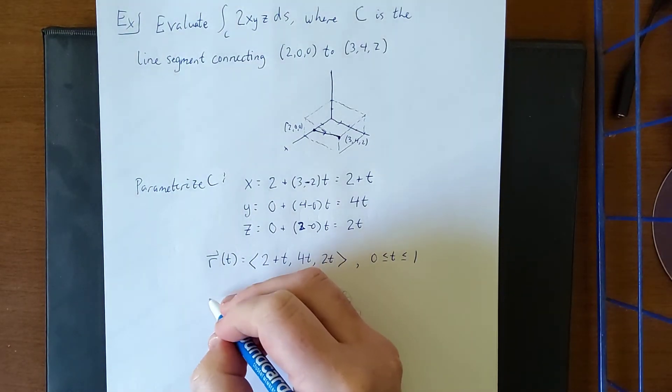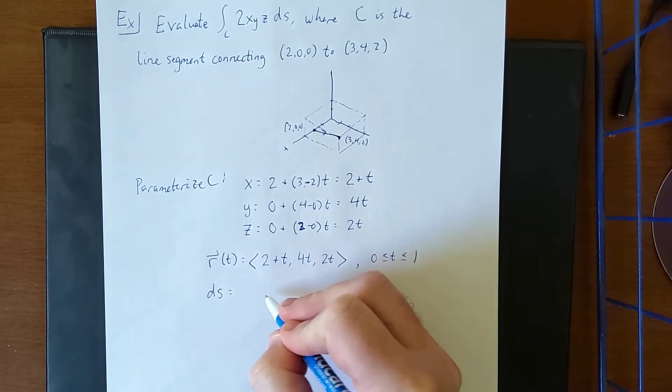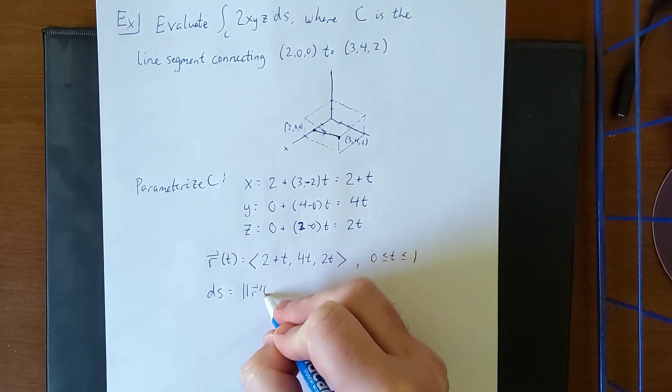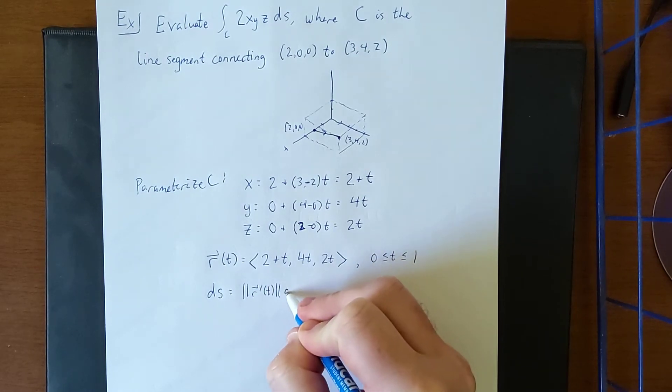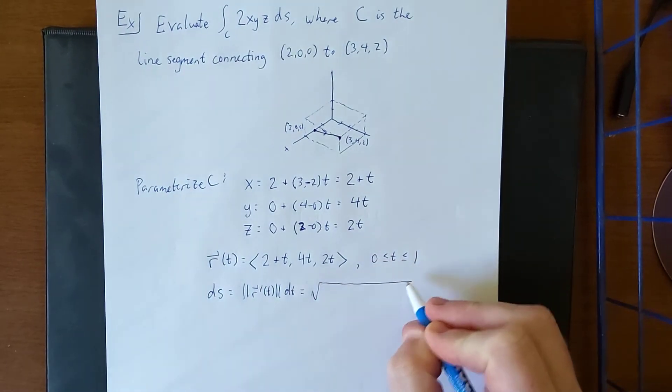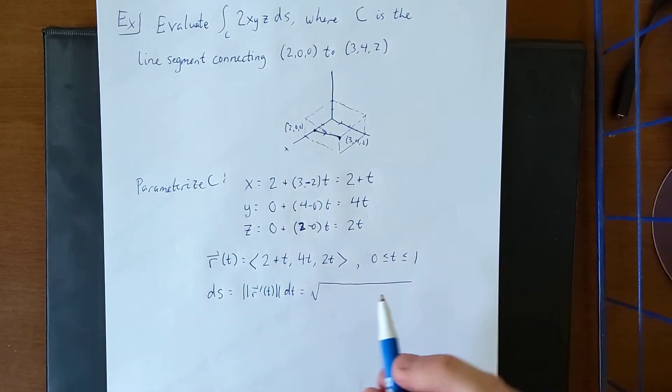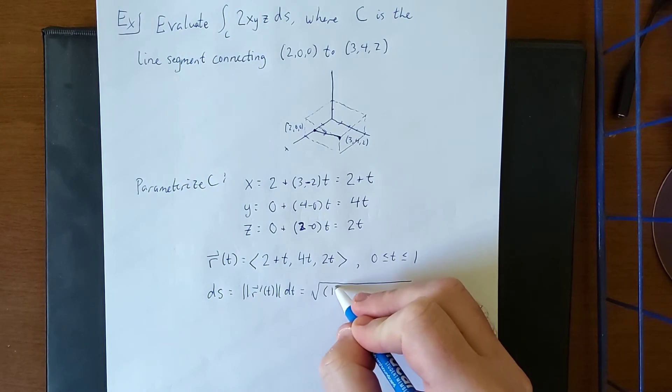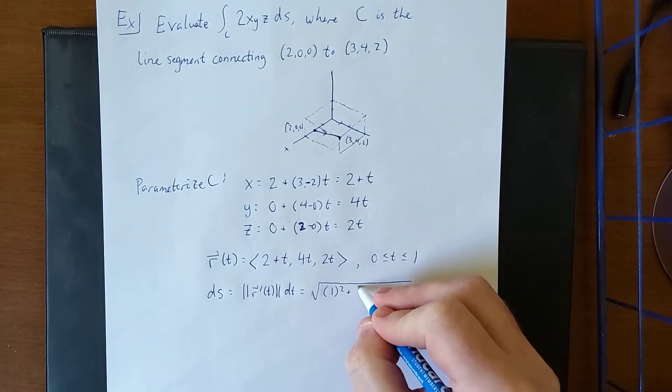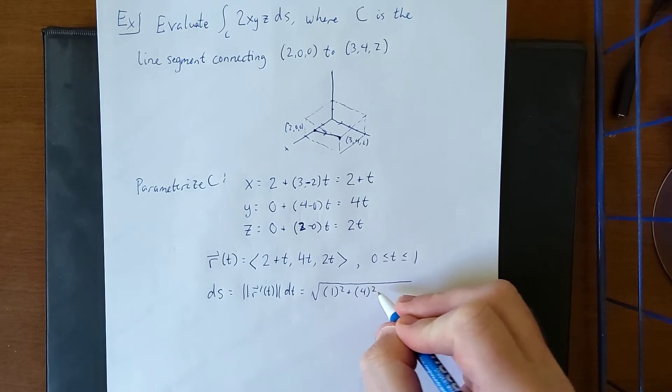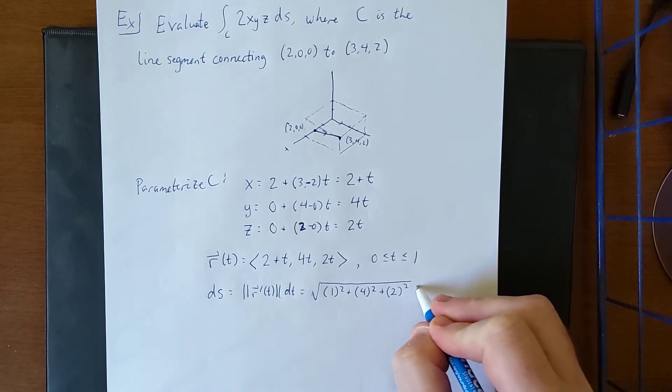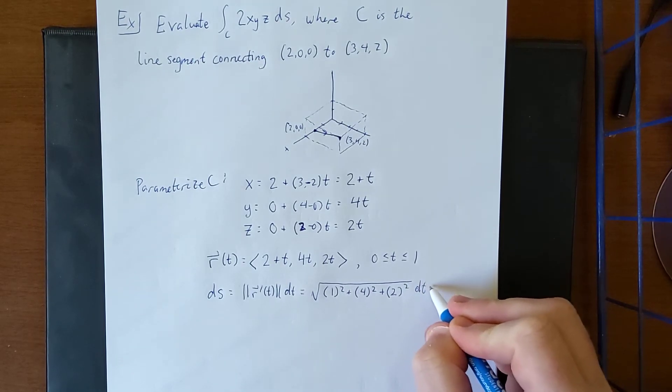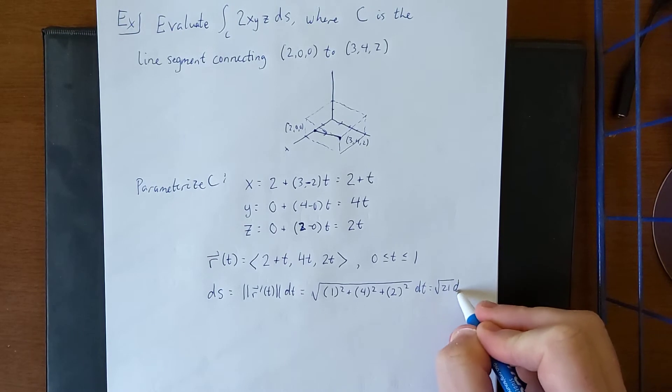One of the reasons that we do this is because we will also need a ds. ds is going to be the magnitude of r'(t) dt, which means take the derivative of all three components, square them, add them up and take a square root. Derivative of 2+t with respect to t is 1. Derivative of 4t is 4. And the derivative of 2t is 2. So we get √(1²+4²+2²) dt = √21 dt.